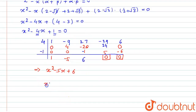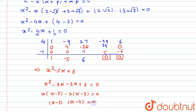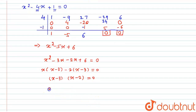We factor x² - 5x + 6 as x² - 3x - 2x + 6 = 0. Taking x common: x(x - 3) - 2(x - 3) = 0, so (x - 3)(x - 2) = 0. This gives x = 3 or x = 2.